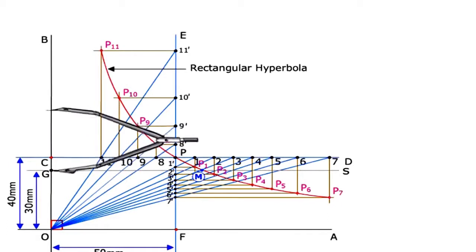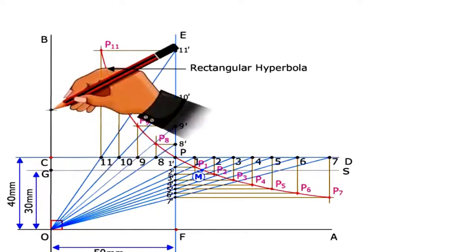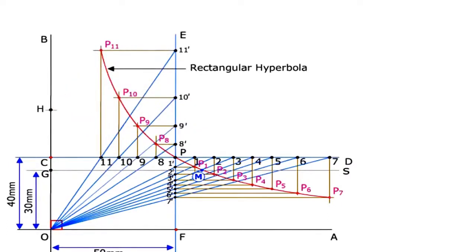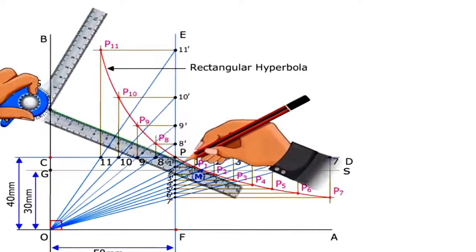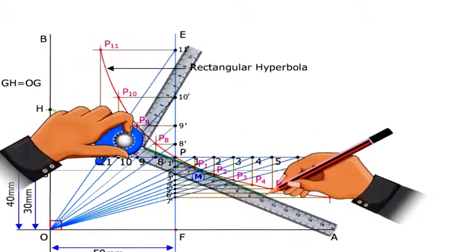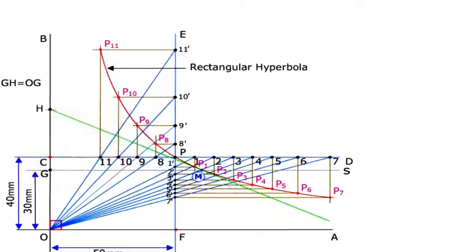Locate the point H on OB such that GH is equal to OG. The line HT passing through M is the required tangent to the curve.